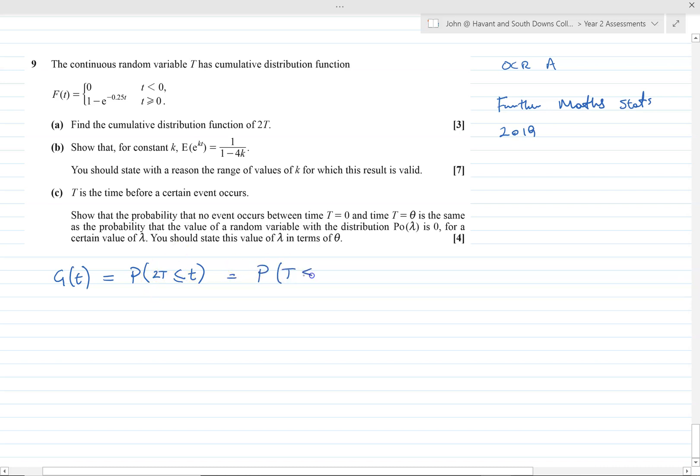So t over 2. And that, by definition of the cumulative function, is F(t/2). In other words, that's 1 minus e to the minus 0.25(t/2). It's minus 1/8, basically.